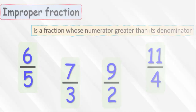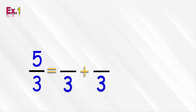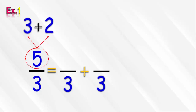First example: we need to convert 5 over 3 to a mixed number form. We can do this by writing the improper fraction in the form of a sum of 2 like-denominator fractions with a denominator of 3, like this. Then we write the numerator 5 in the form of the sum of 2 numbers, one of them divisible by 3, like 3 plus 2. Then we write 3 in the numerator of the first fraction and 2 in the numerator of the second fraction.